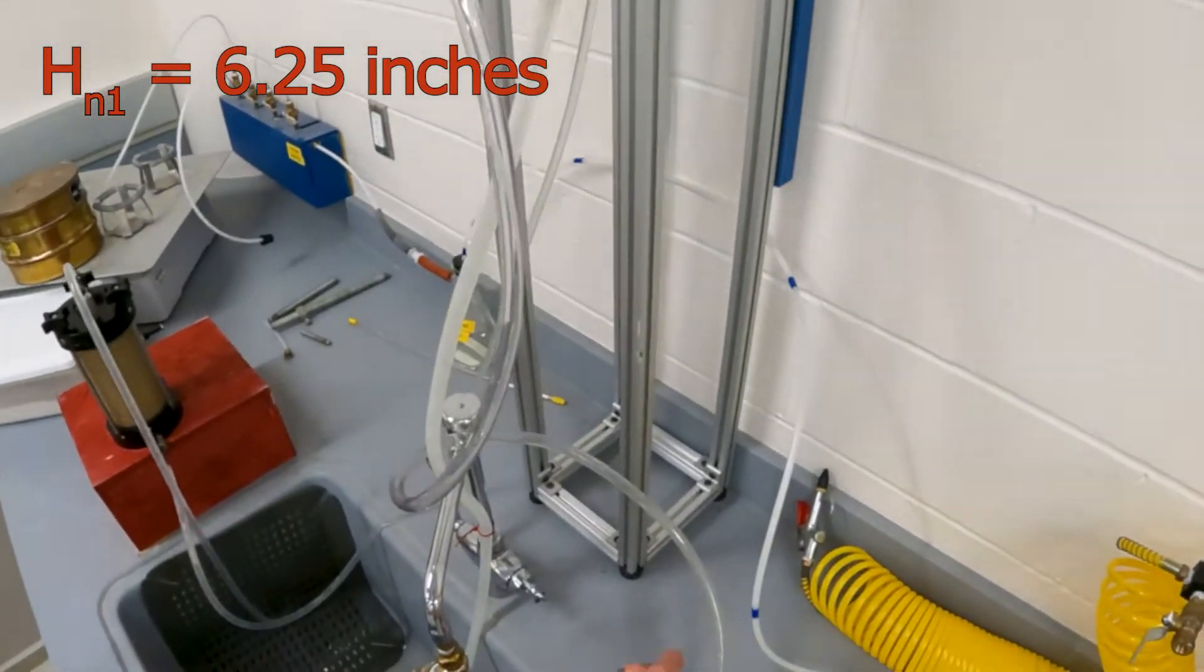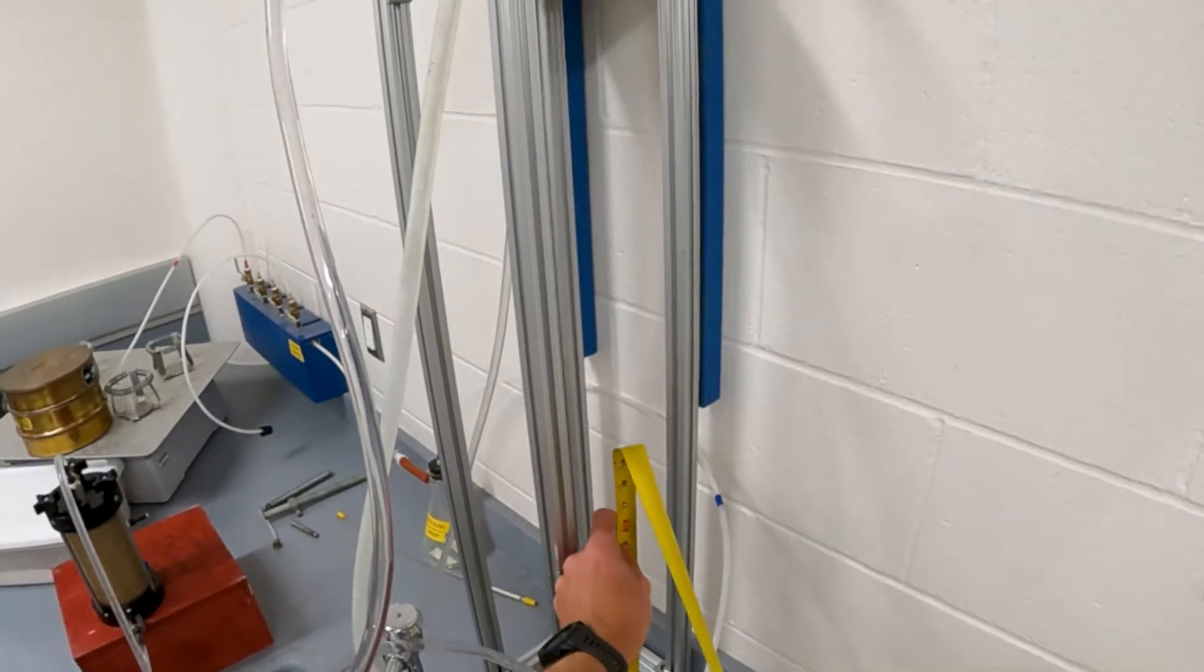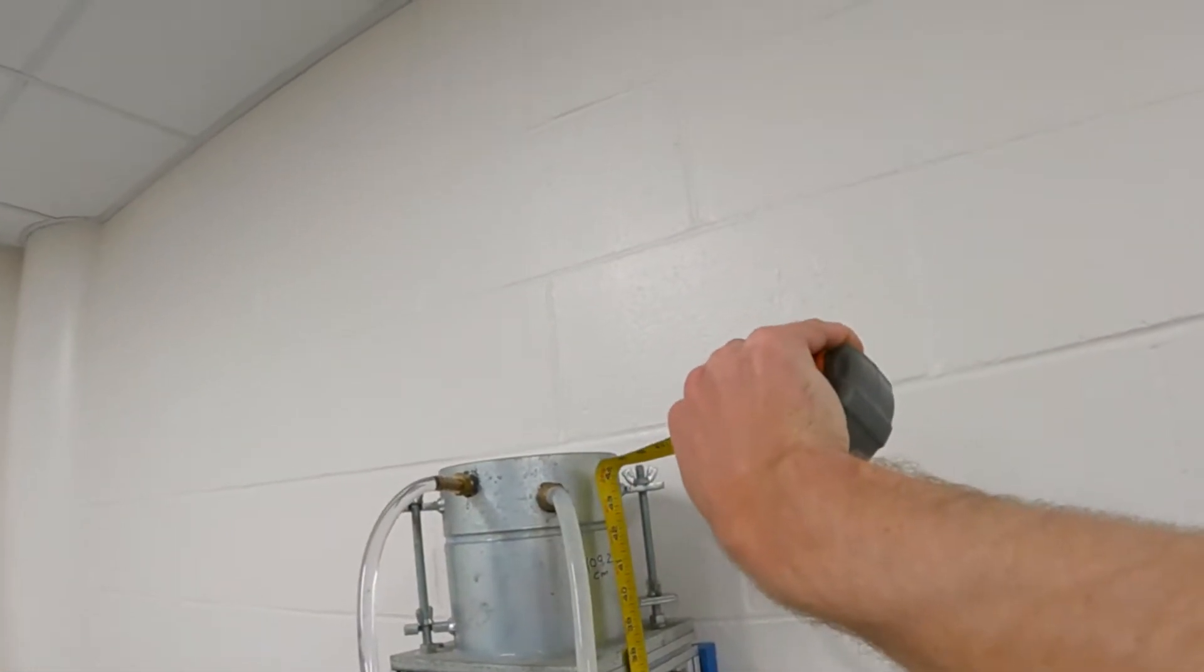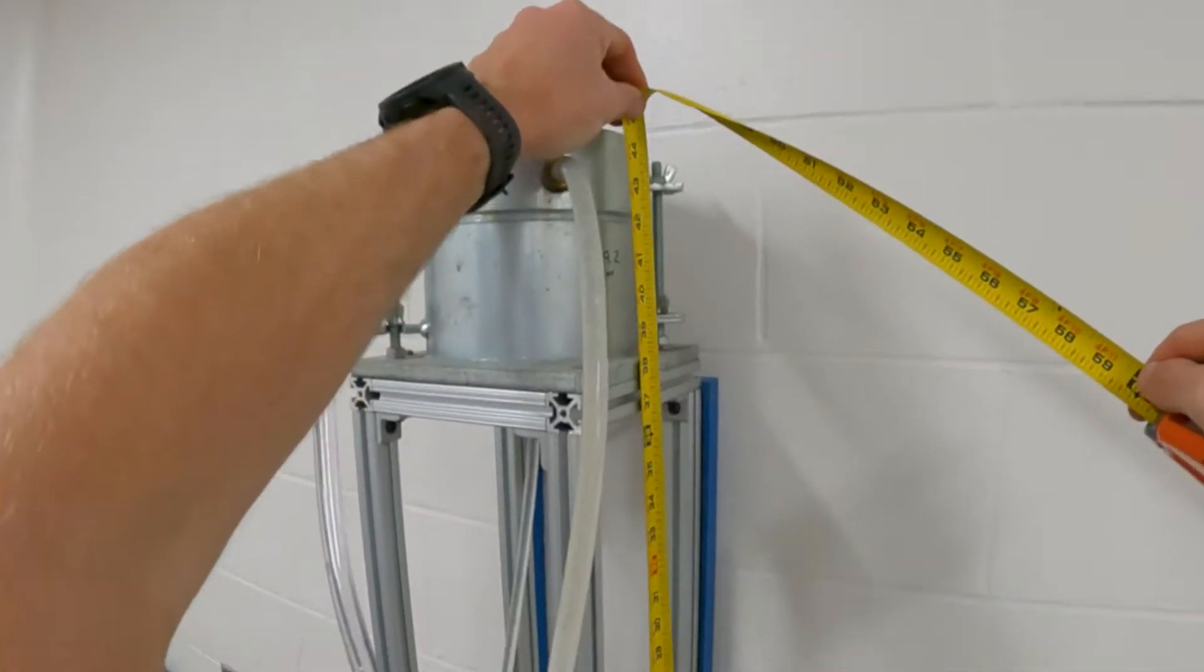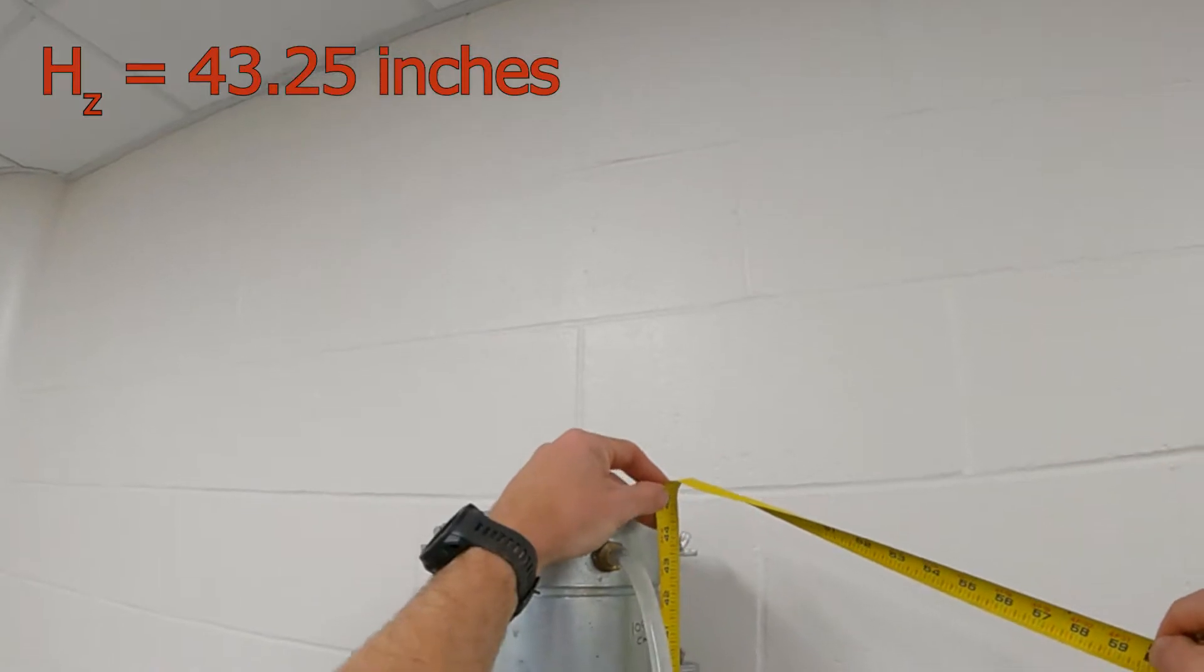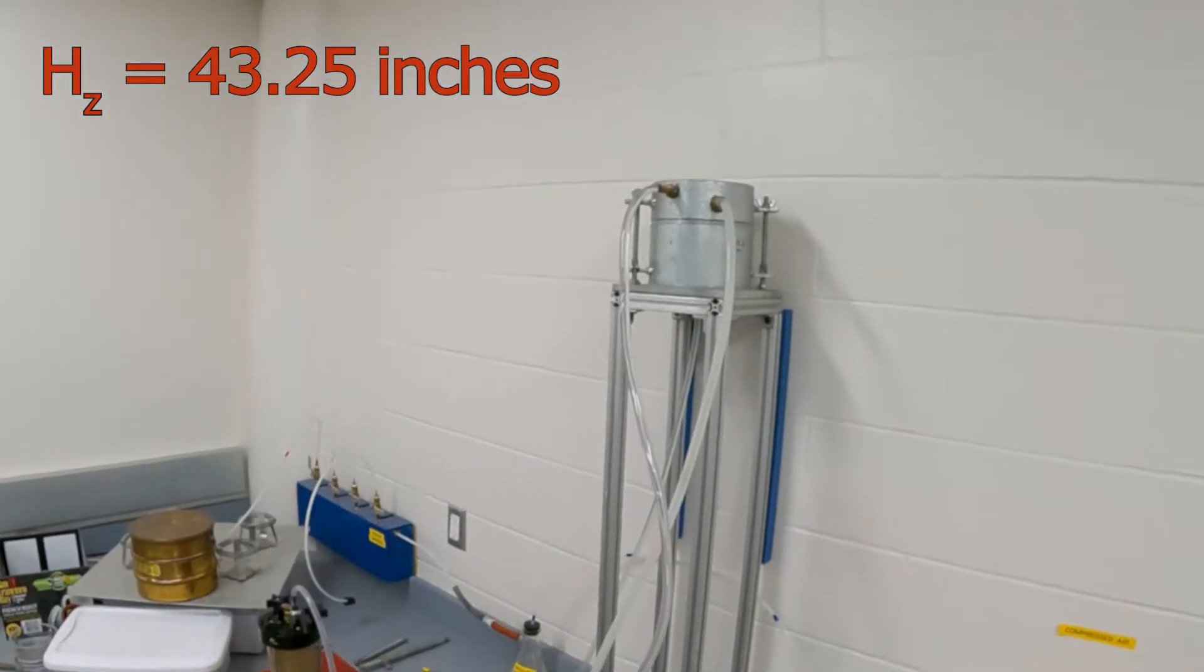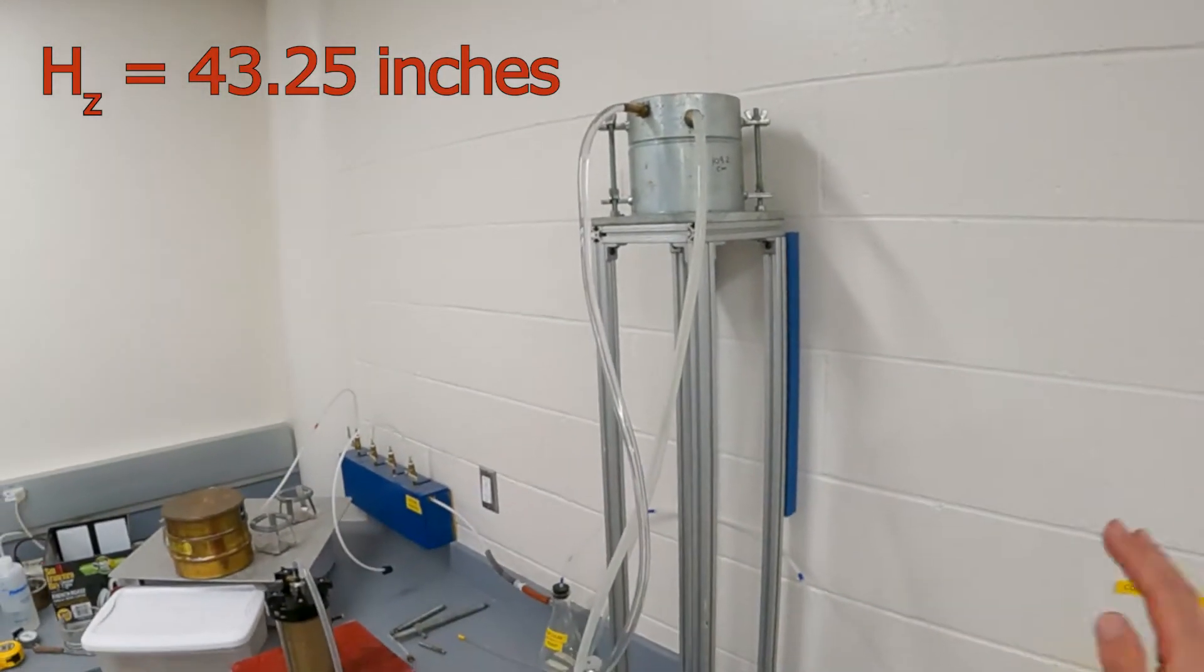We can tell by this tube that is constantly letting water out, so it should be at this constant head, constant water level. Table is our datum. We will take this and try to get a good estimate to that line - 43 and 3 eighths inch, maybe 43.25. So 43.25 is going to be our HZ and that's not going to change through the whole experiment.